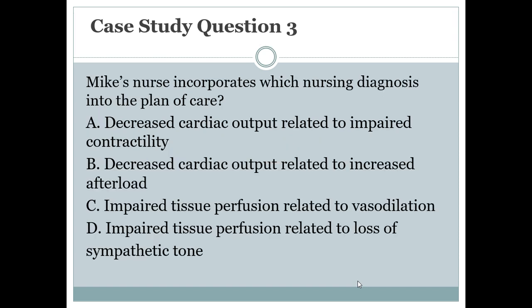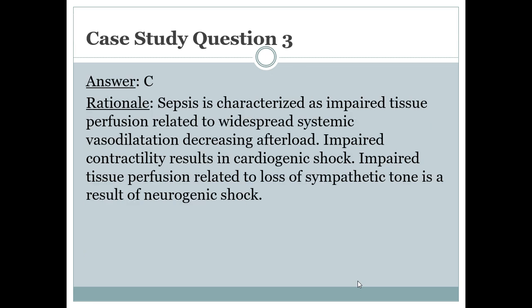Case study question 3: Mike's nurse incorporates which nursing diagnosis into the plan of care? The answer is C — impaired tissue perfusion related to vasodilation. Sepsis is characterized as impaired tissue perfusion related to widespread systemic vasodilation decreasing afterload. Impaired contractility results in cardiogenic shock, and loss of sympathetic tone is neurogenic shock.